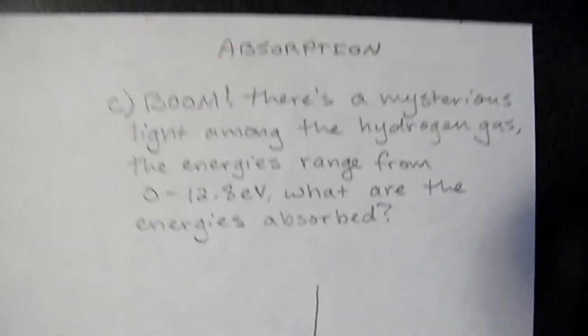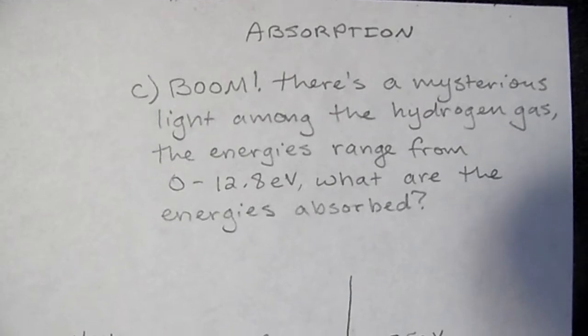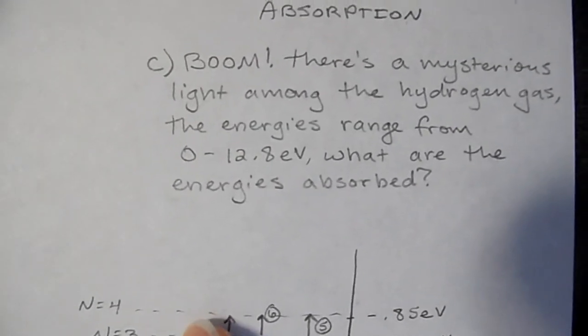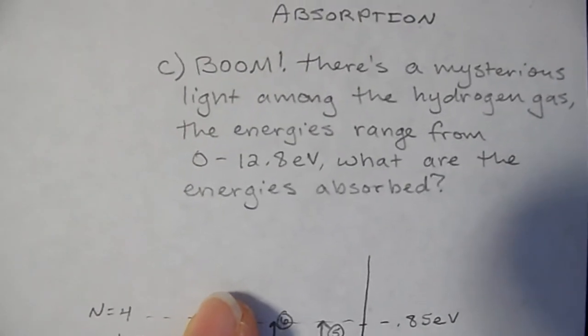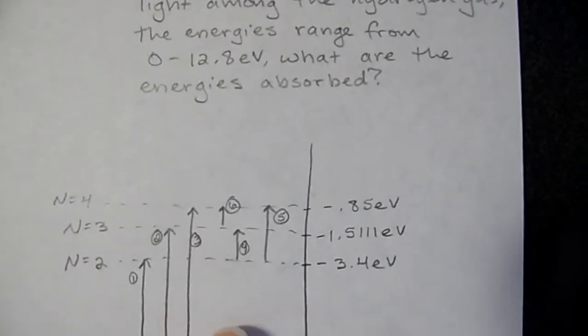Now on to part C. This is absorption. We have light that is already inside of the hydrogen gas, and the light ranges from the energies of zero electron volts all the way up to 12.8. We want to find out which of these energies will be absorbed.